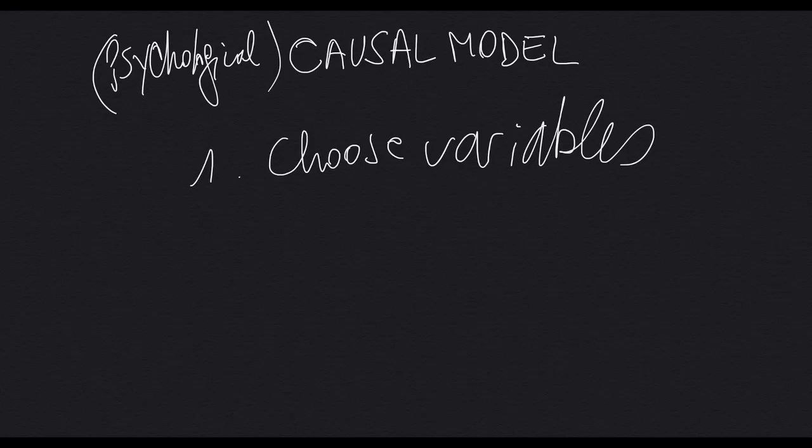You will observe the effect on the consequence variable. So basically, you need one variable, the causal variable, and then the other variable, the consequence variable. You need to choose the variables.